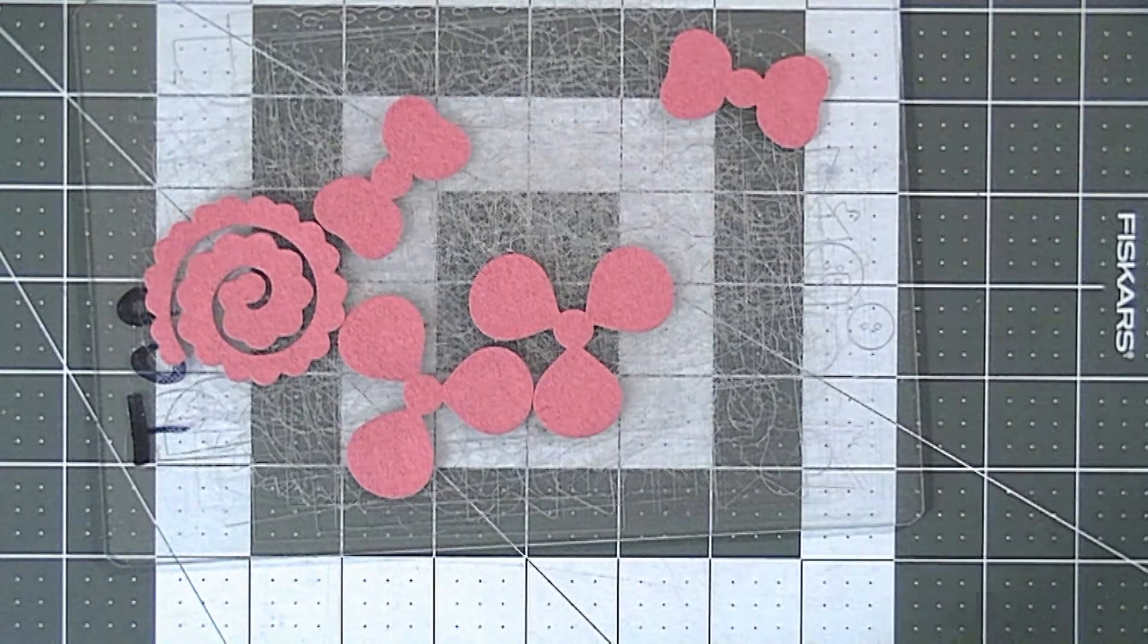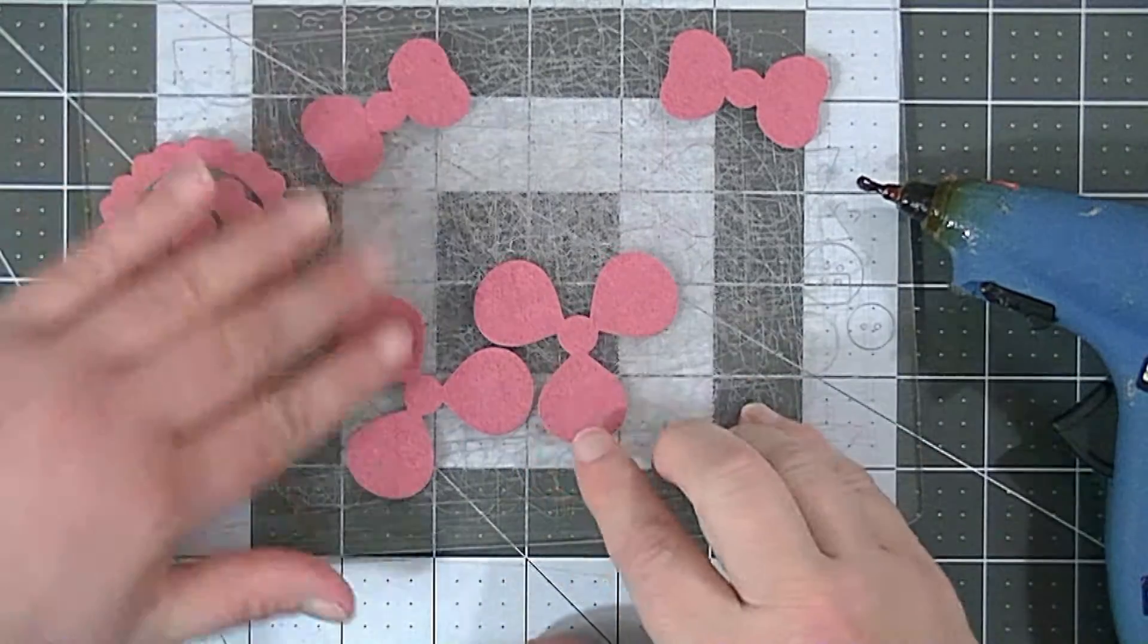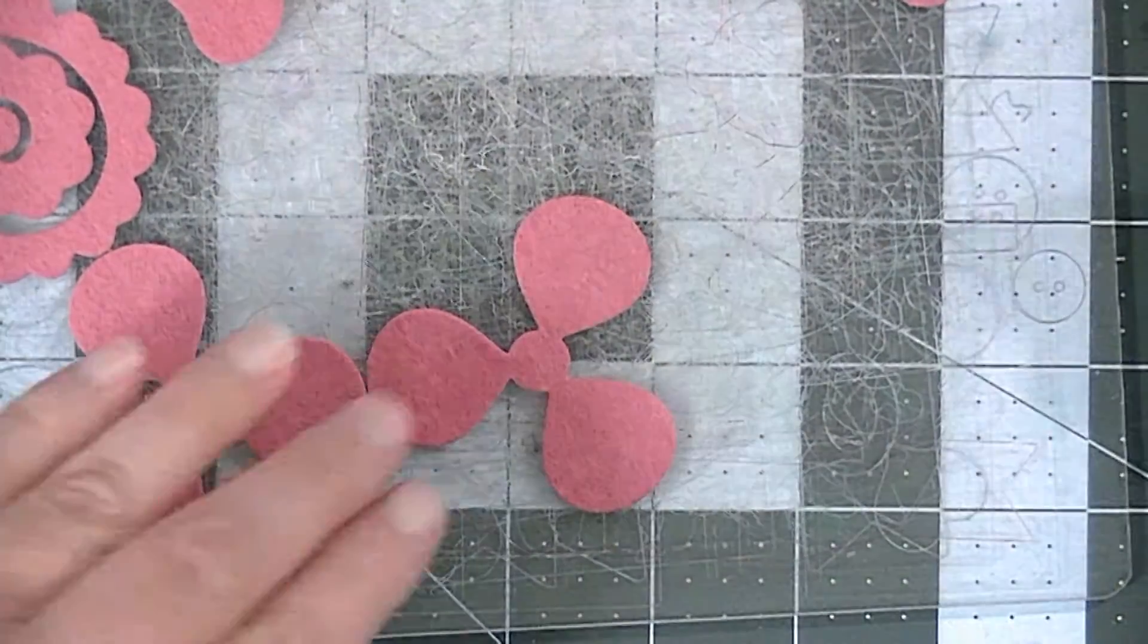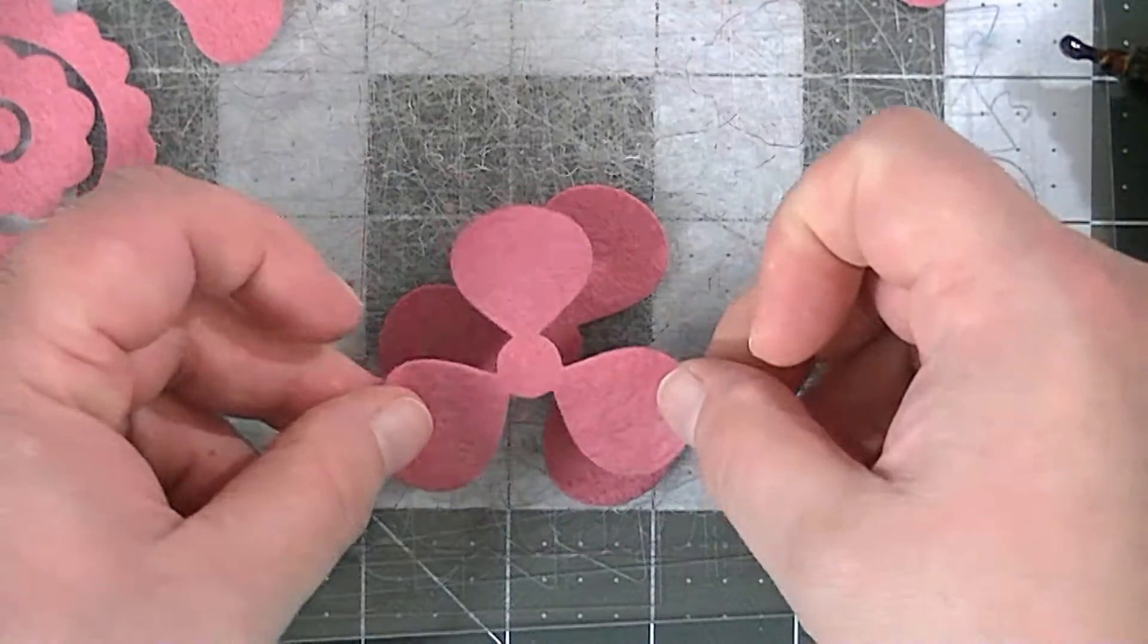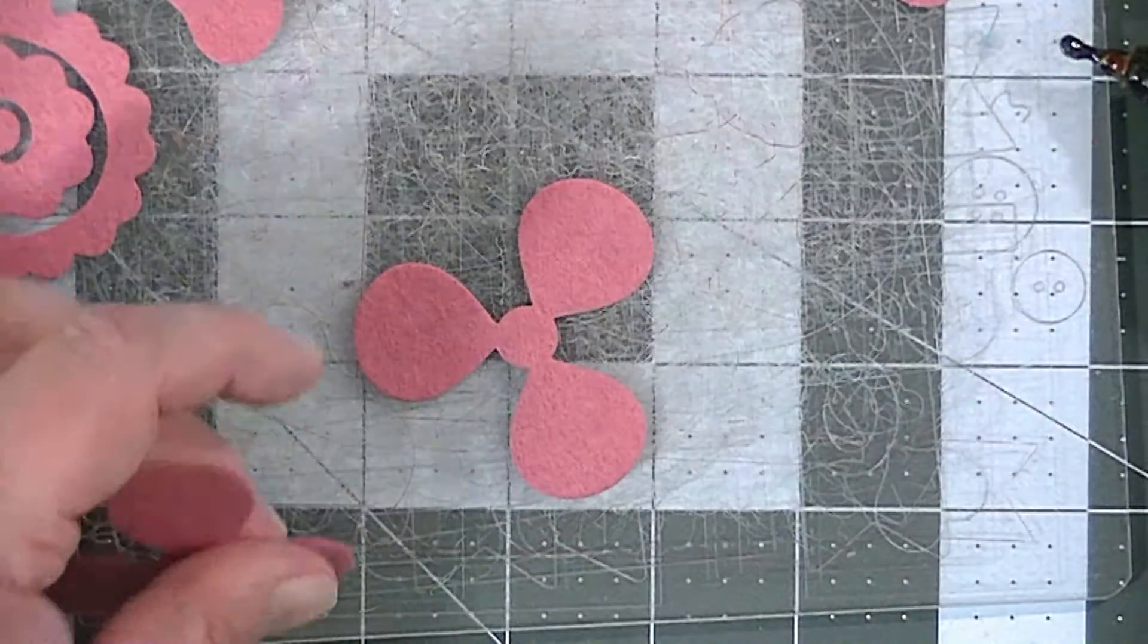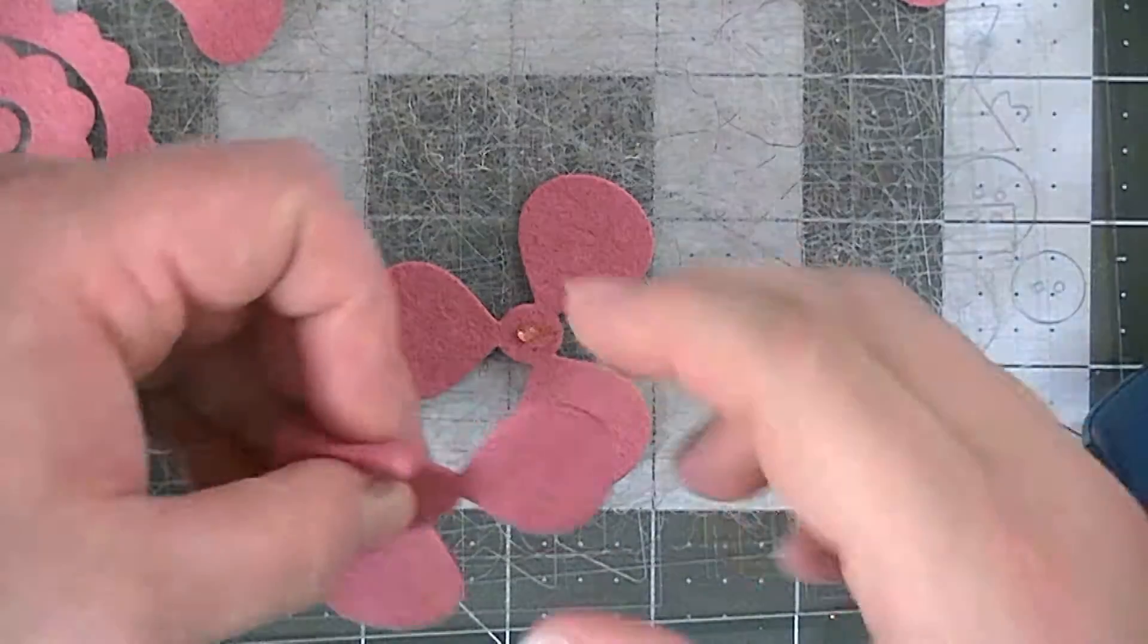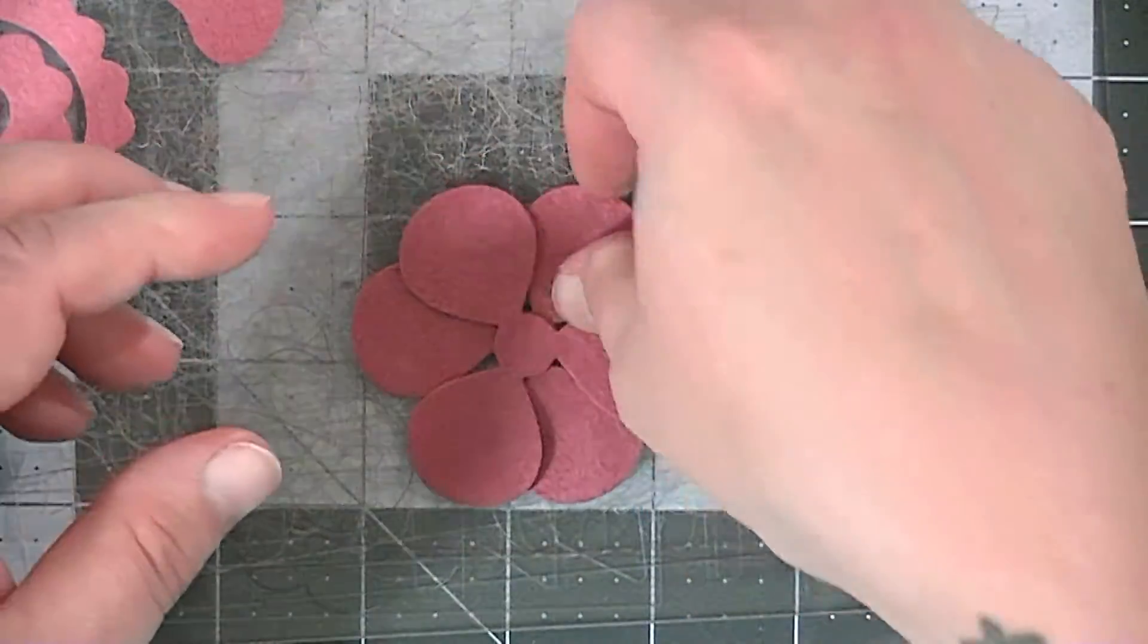You're also going to need some hot glue, and you're going to start off with these pieces that look like pinwheels. The first thing you're going to do is glue this piece on top of this piece, but you want the petals to alternate, so it's going to look like that. Just put a little dollop of glue in the middle and glue your first piece on.